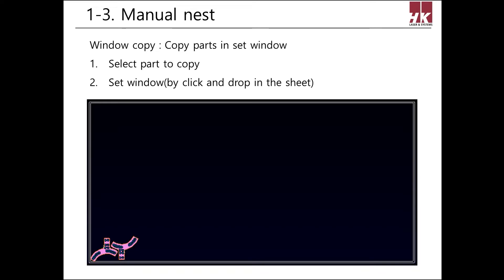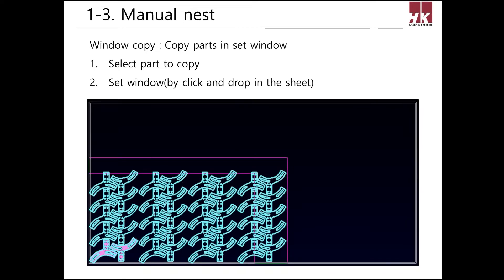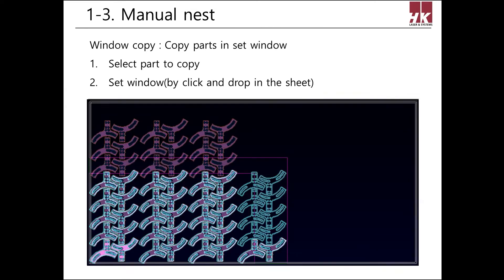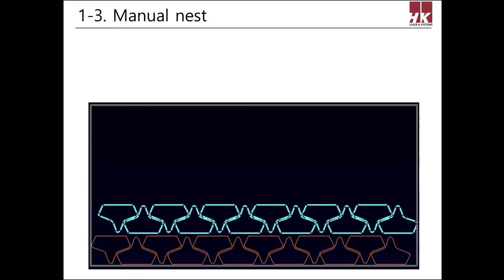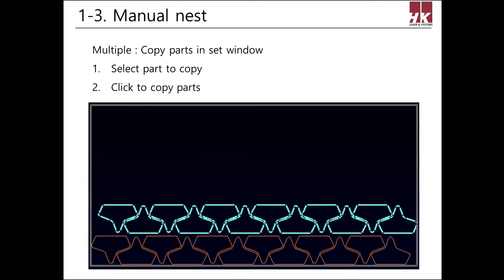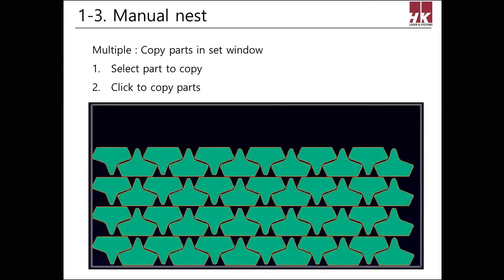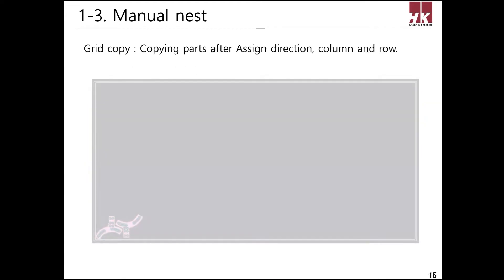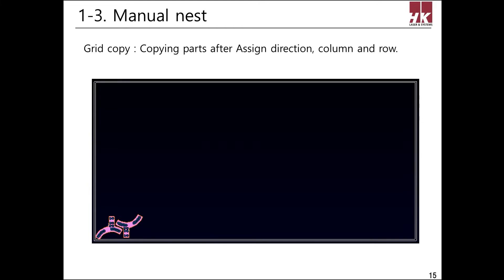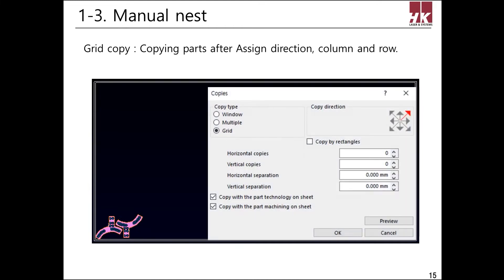First, Window copies a selected part within a window made by click and drag. Second, Multiple is the normal type of copy, which copies the selected part by each click. Lastly, Grid copies a part in the designated vertical and horizontal directions.